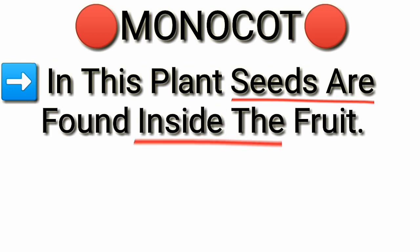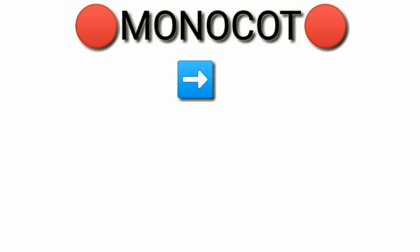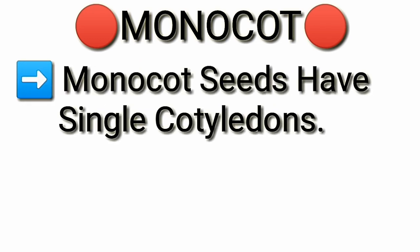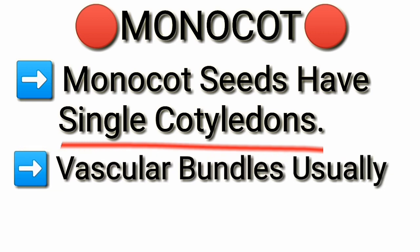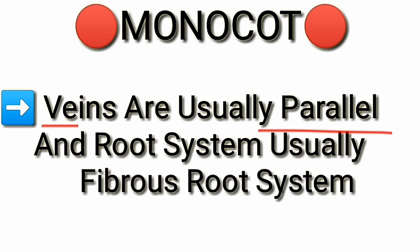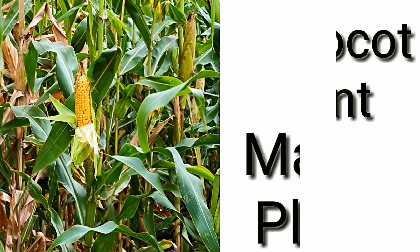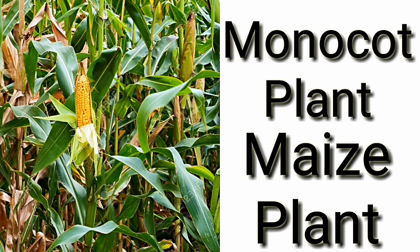Next is the monocot plant. In this plant, seeds are found inside the fruit, and root, stem, leaves, fruit, flowers, and seeds are well developed. Monocot seeds have one cotyledon. Vascular bundles are usually complexly arranged. Veins are usually parallel. Maize is an example of a monocot plant.